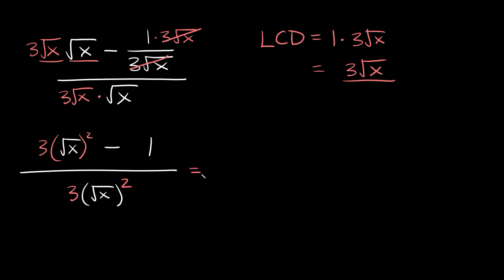Whenever you square a square root, or square a radical, they simply cancel out and you're left with what's inside the radical — so just an x. So here we just have 3 times x. We're going to say 3x, and then we still have the minus 1. On the bottom, the square root and the squared exponent cancel out, so we're just left with x times 3, which is 3x.